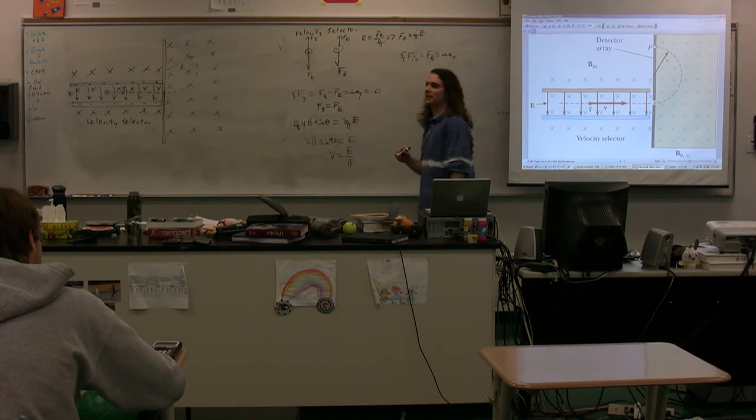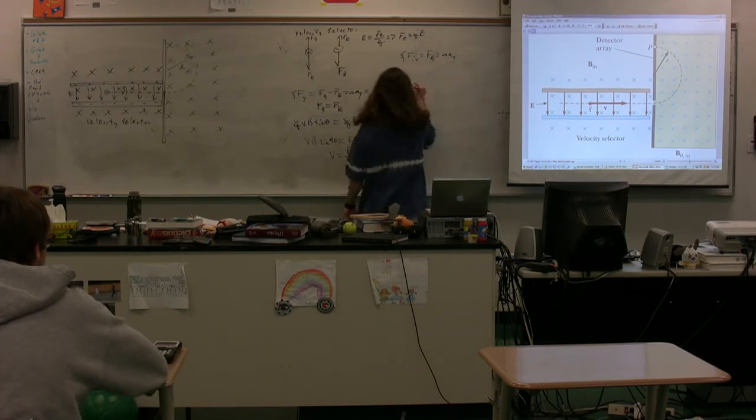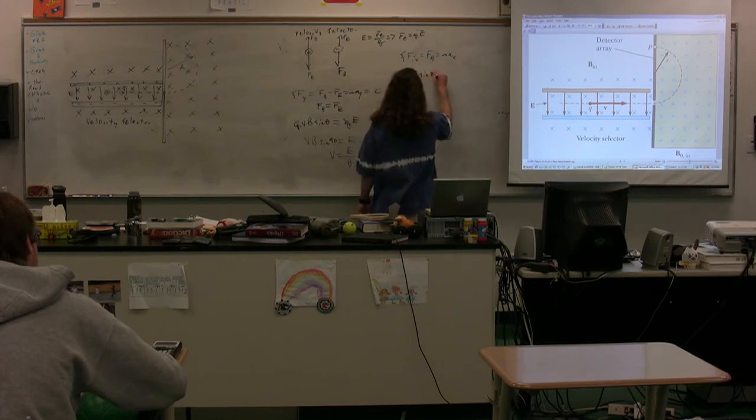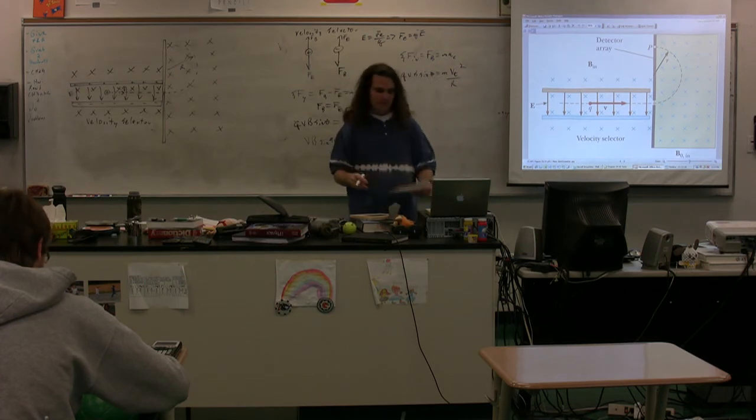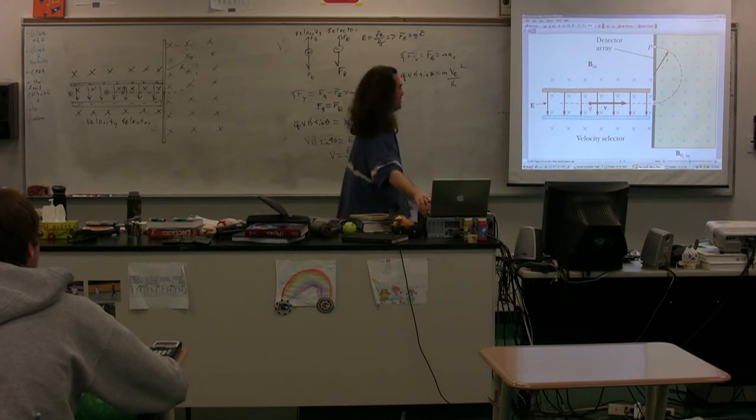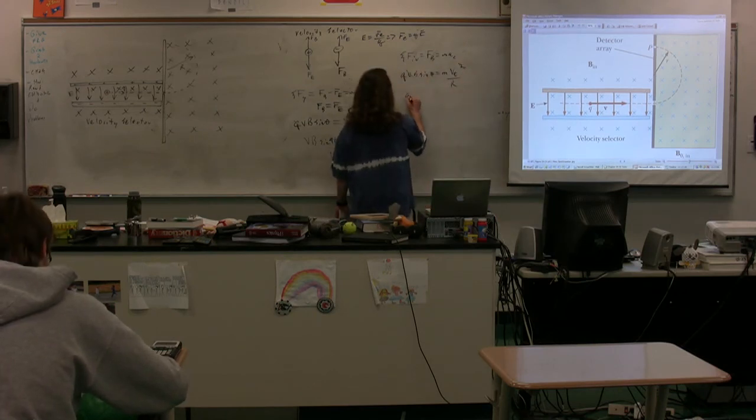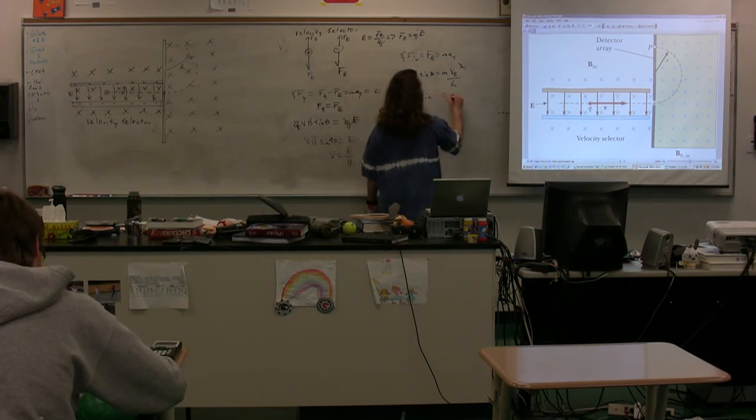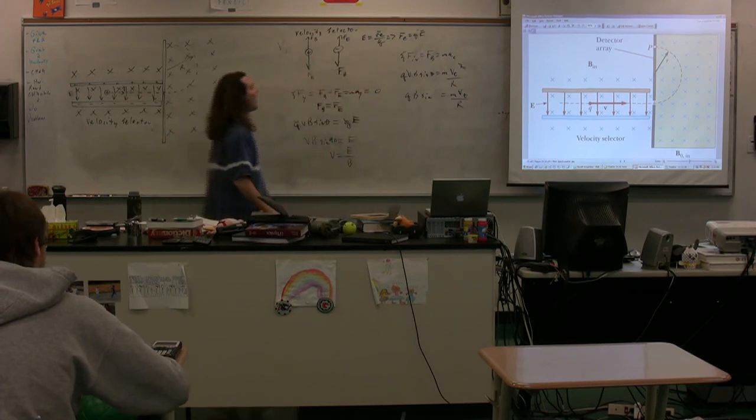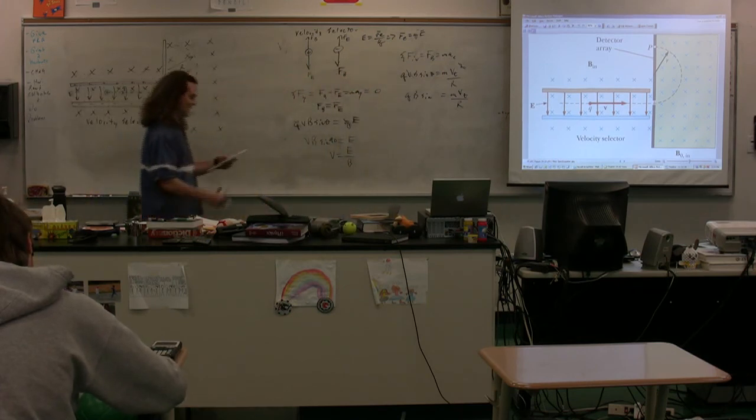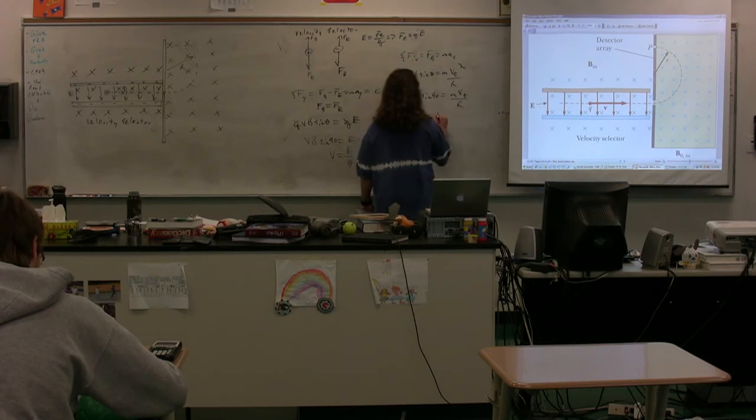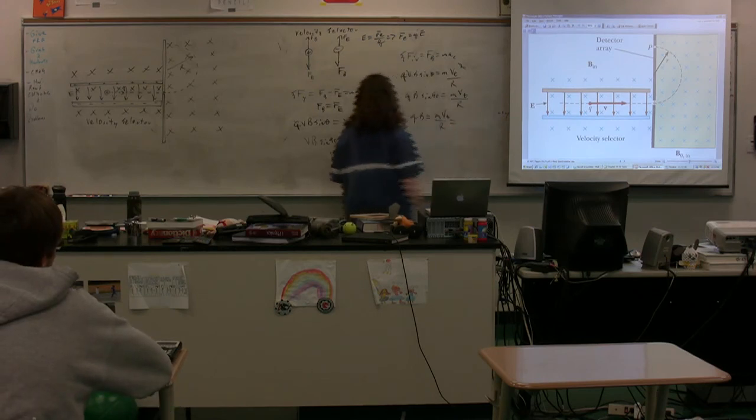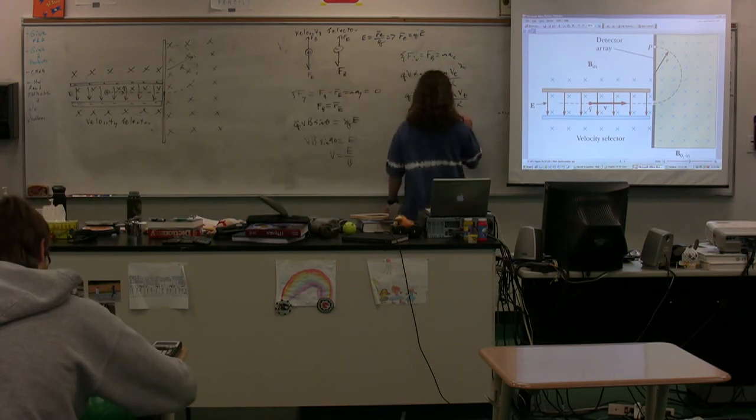If we sum the forces in the in direction, we get the magnetic force is equal to mass times the centripetal acceleration. So the magnetic force, QVB sin theta is equal to mass times tangential velocity squared divided by the radius. We get Q times V times B sine of theta is equal to mass times the tangential velocity divided by the radius. Again, the angle between the velocity and the magnetic field is 90 degrees. Therefore, we get QB is equal to mass times the tangential velocity divided by the radius. Well, we already solved for the velocity that's equal to the electric field divided by the magnetic field.